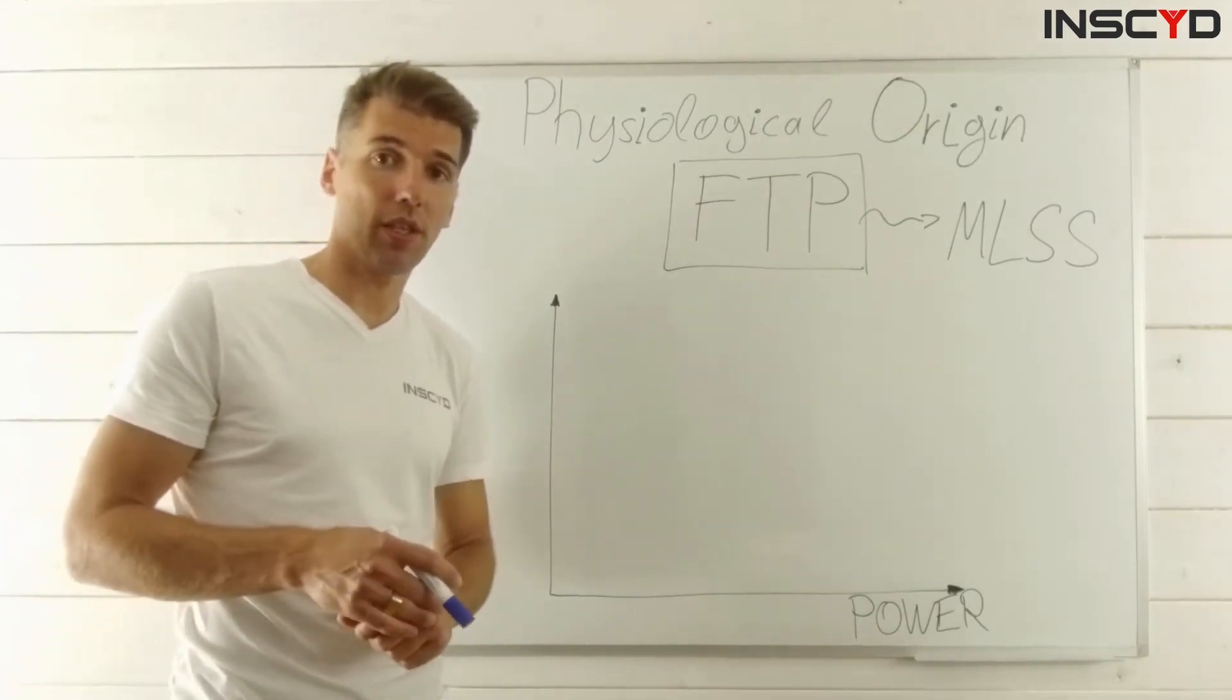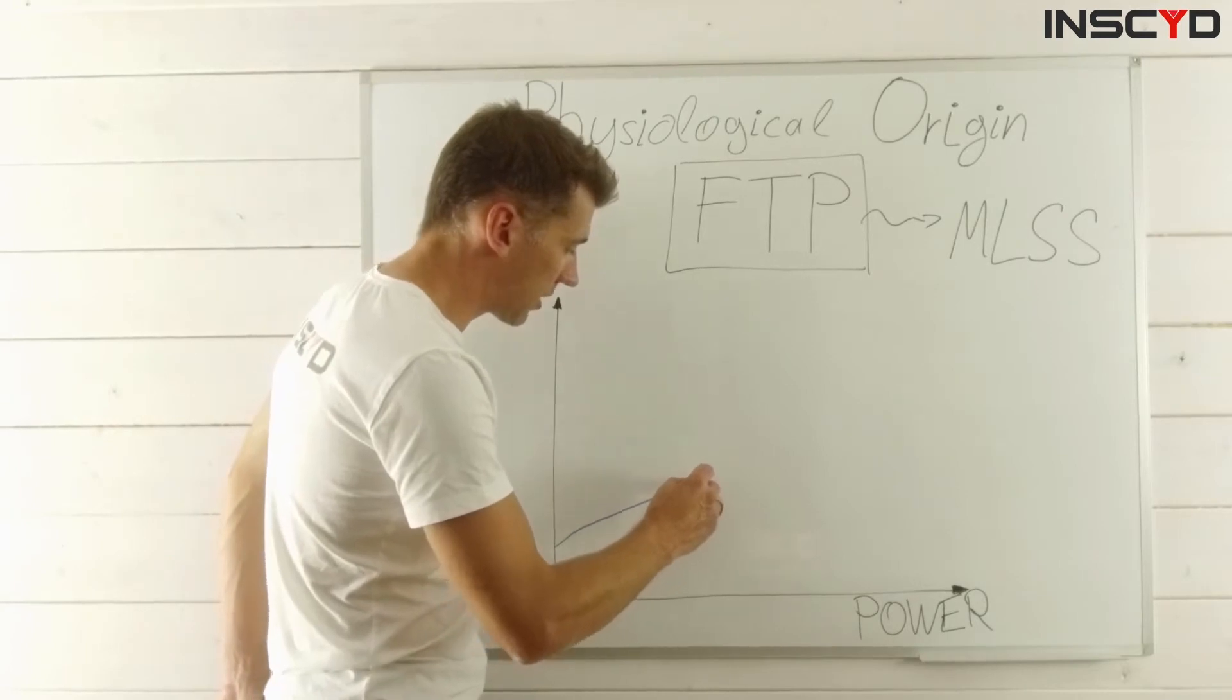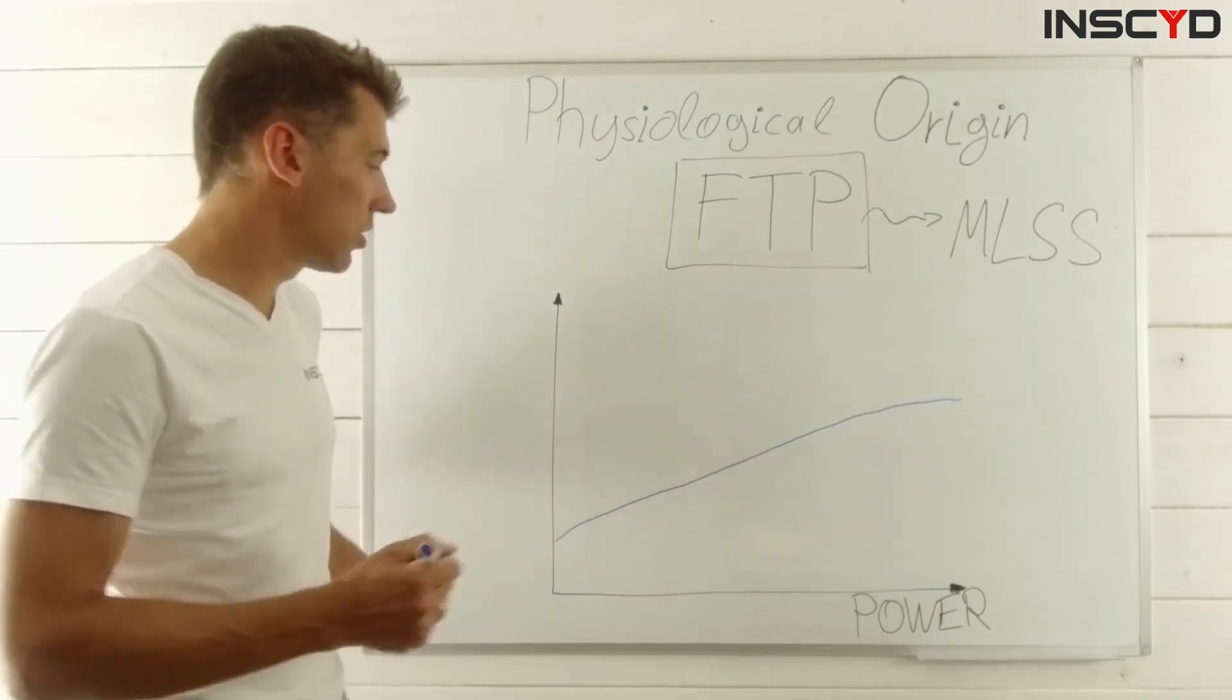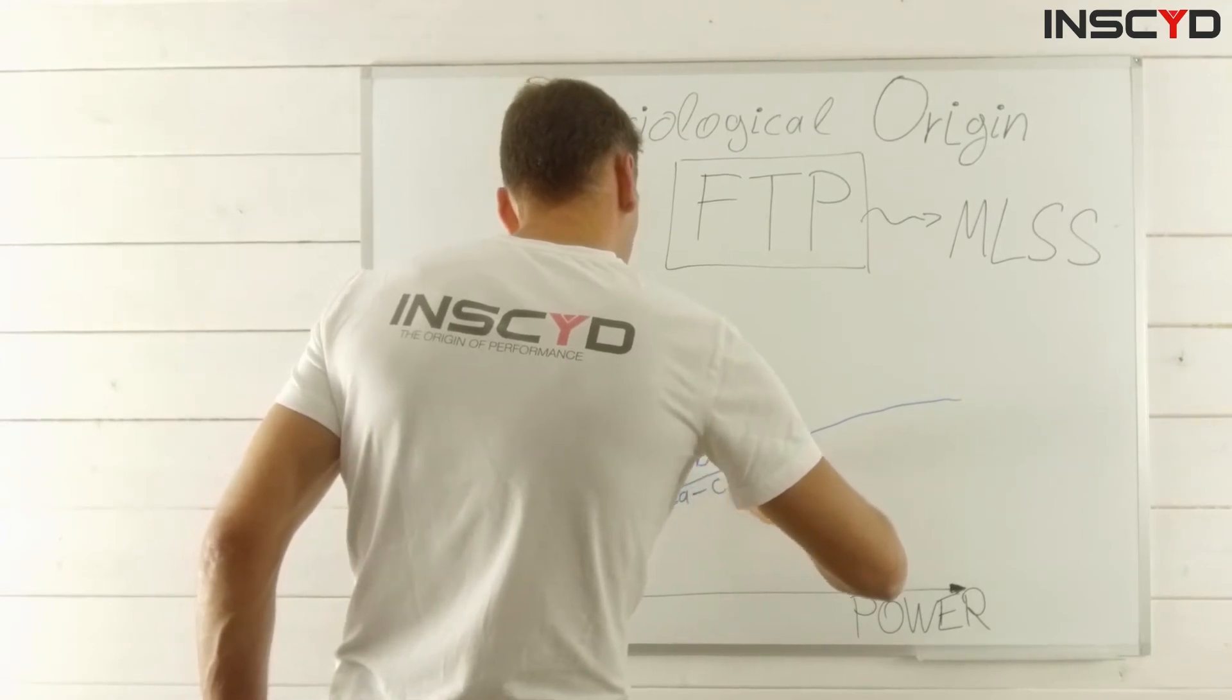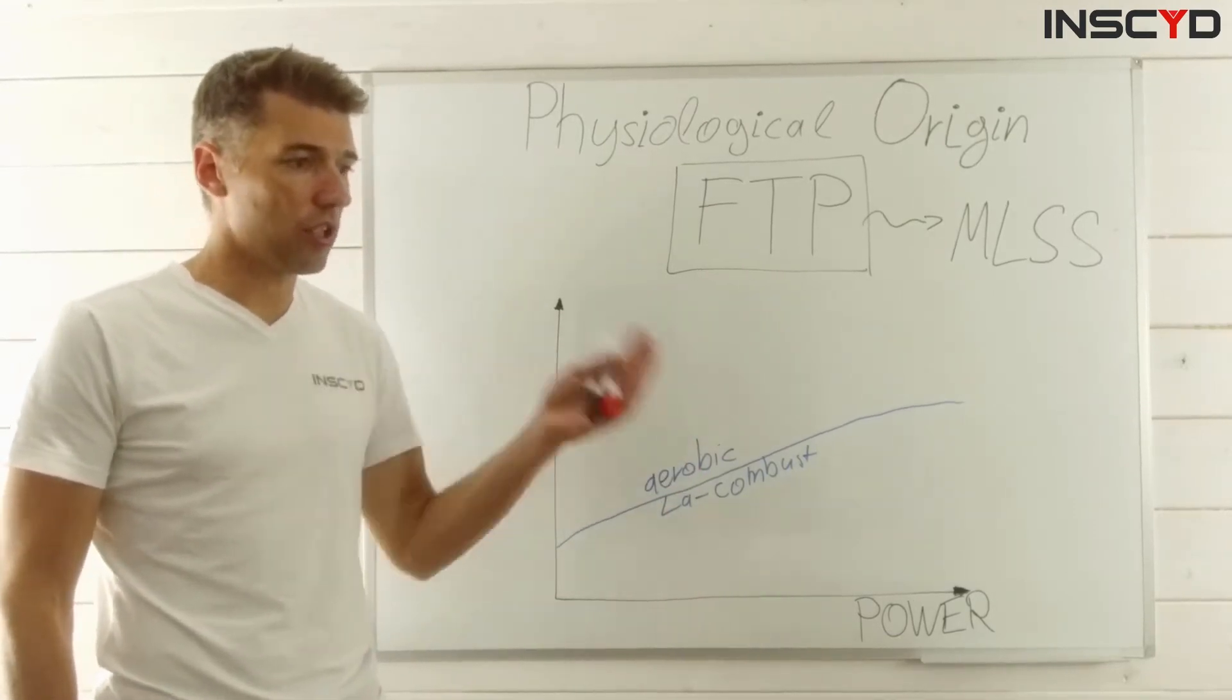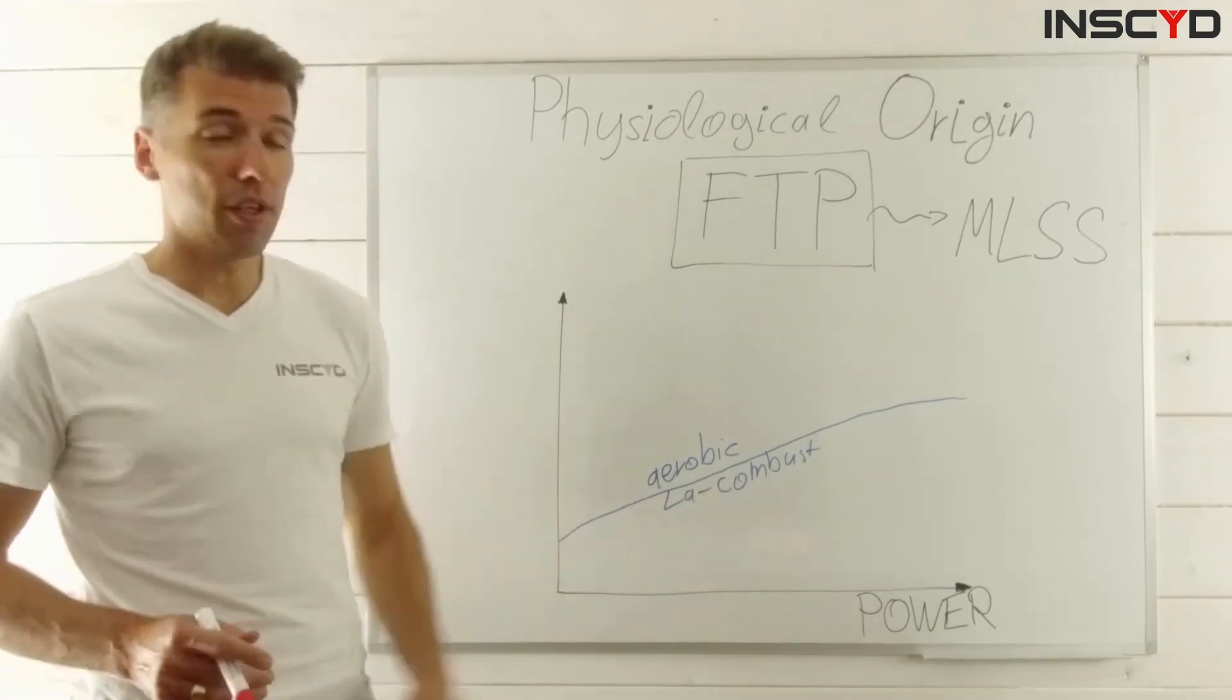Let's start with the lactate combustion. When you increase the power output from a low power output to a high power output, or a running speed if you want, what is basically happening with the aerobic metabolism and therefore with the ability to combust lactate? It is more or less increasing linearly. At the end it's maybe leveling off a little bit, but more simplified, it's a more or less linear increase. This is your aerobic system or the ability to combust lactate. This is something you can find really everywhere - just go to Google and look at oxygen uptake, VO2, in incremental test. Just look at your heart rate in a ramp test scenario. All those indicators for aerobic metabolism, you will see there's almost a linear increase.